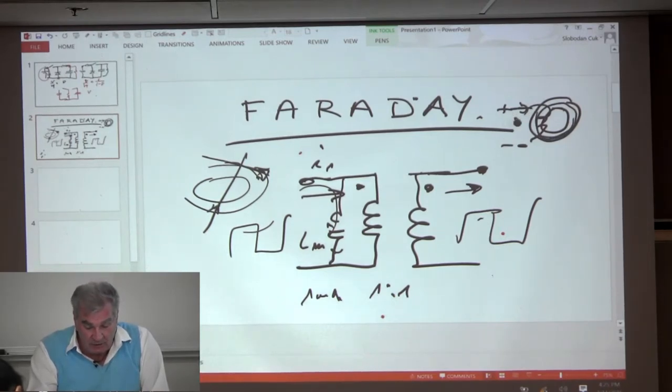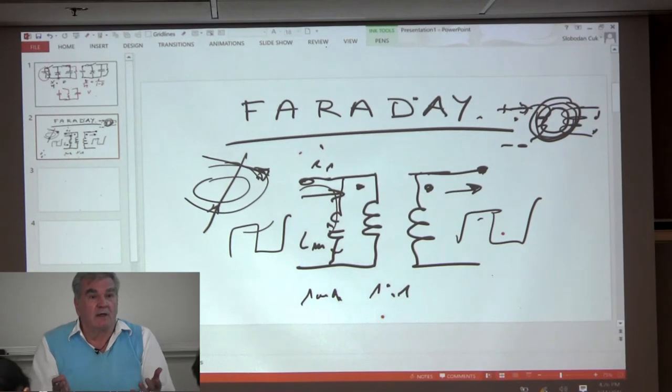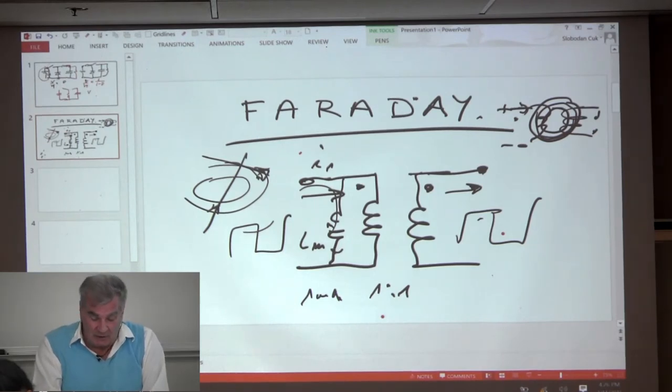So changing voltage here generates a changing current here. Changing current generates a changing flux in the core. And guess what? Changing flux in the core induces a voltage on the next line—the other winding—which is not electrically connected to it. That's the beauty of the transformer. And does this change in magnitude depending on how much current?